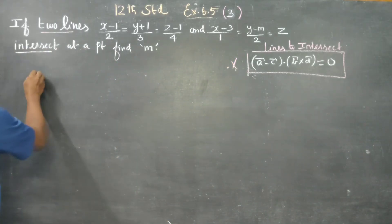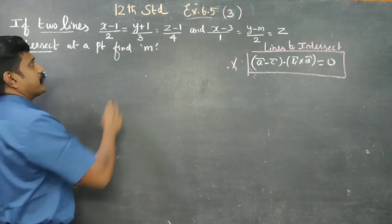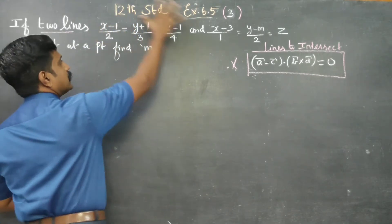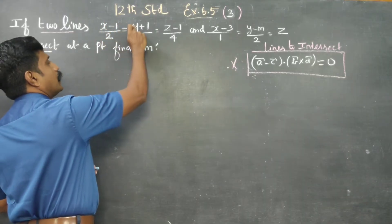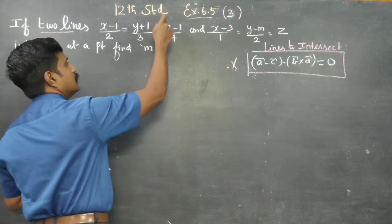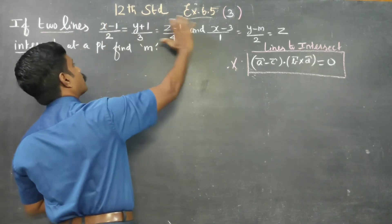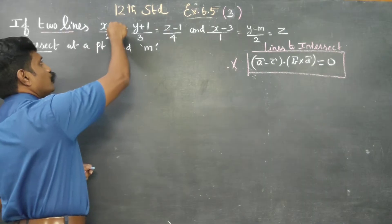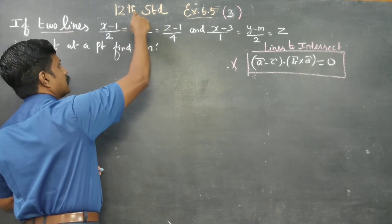First, I will write my A vector. The A vector is a point in the Cartesian form: (x minus x1) by b1, (y minus y1) by b2, (z minus z1) by b3. That is the Cartesian format. The point can be identified from the line equation in this format.